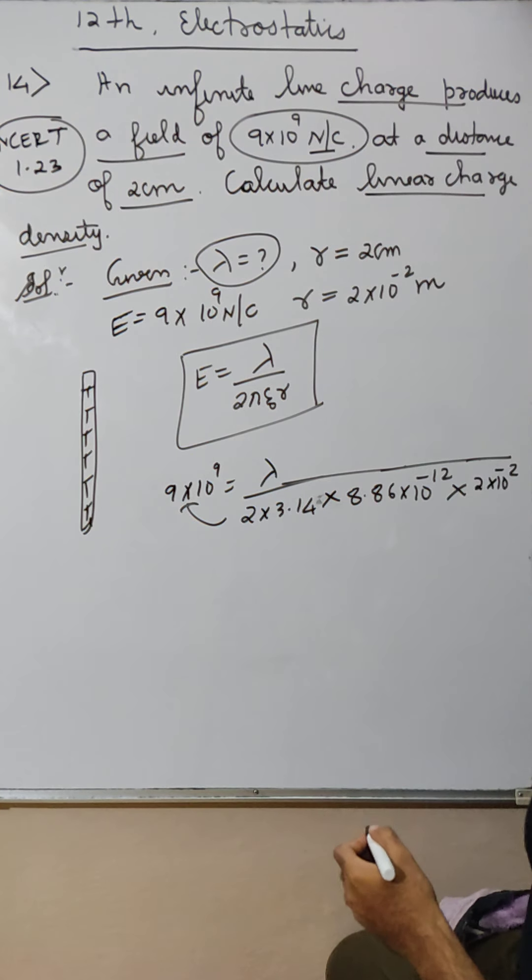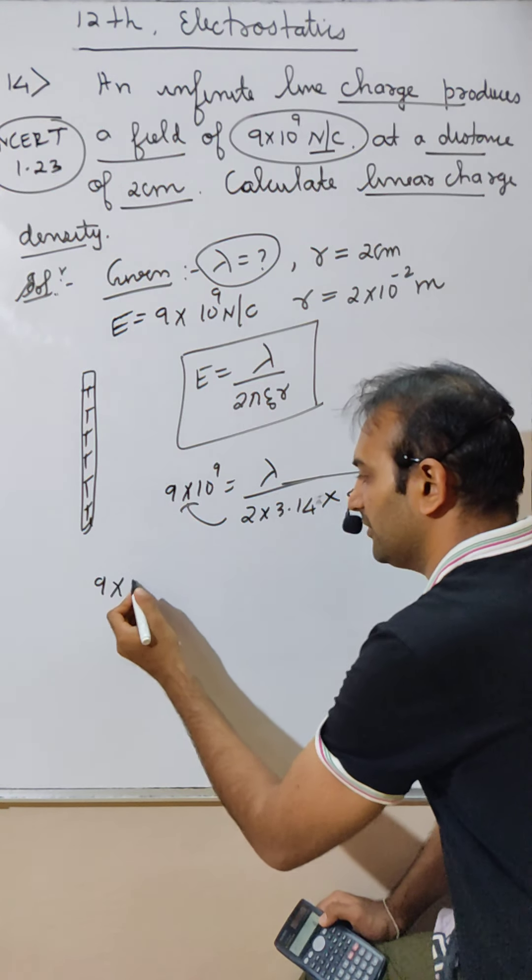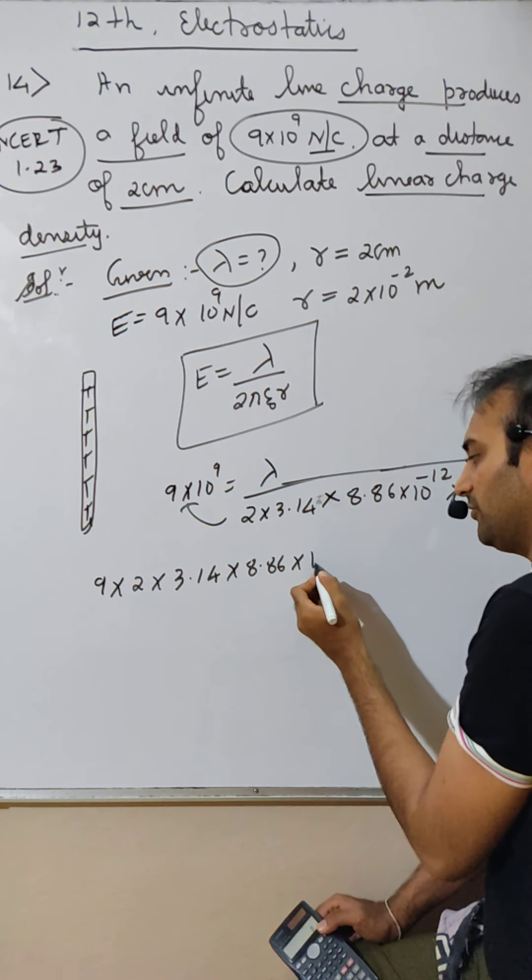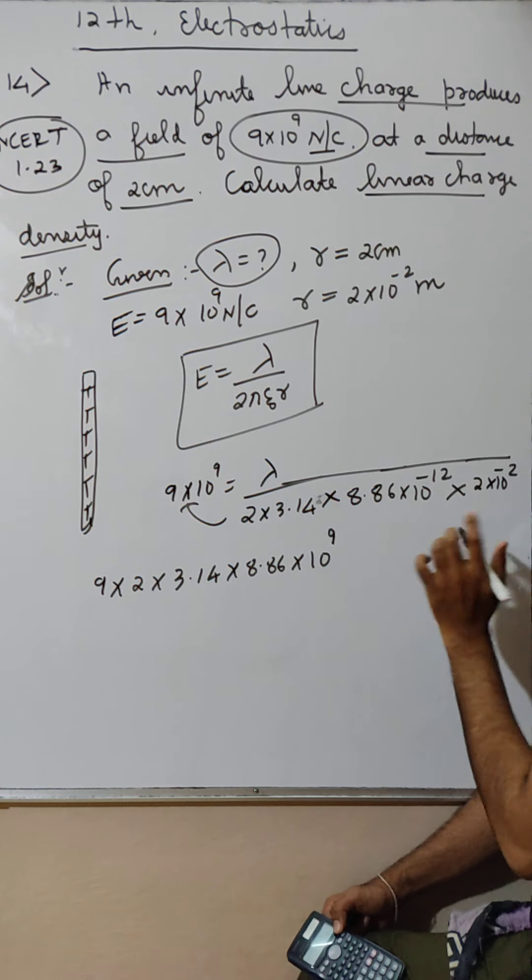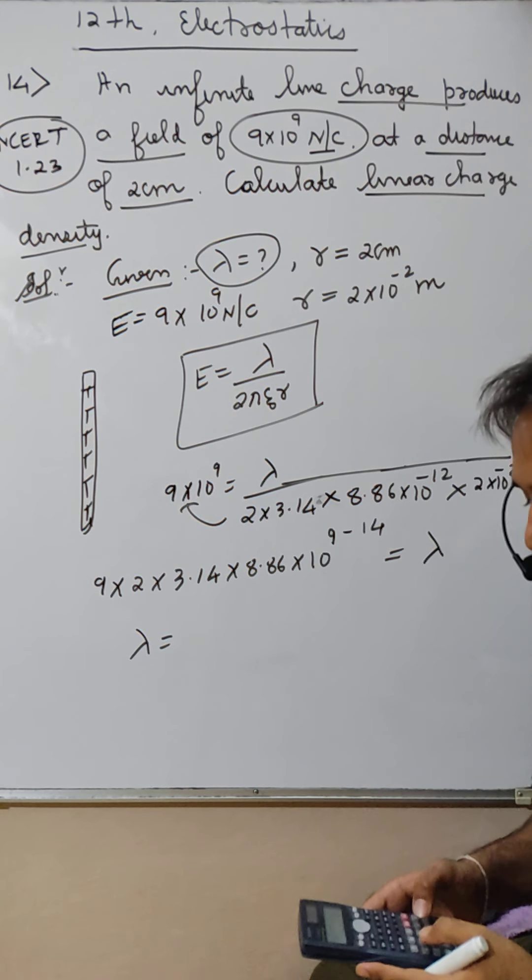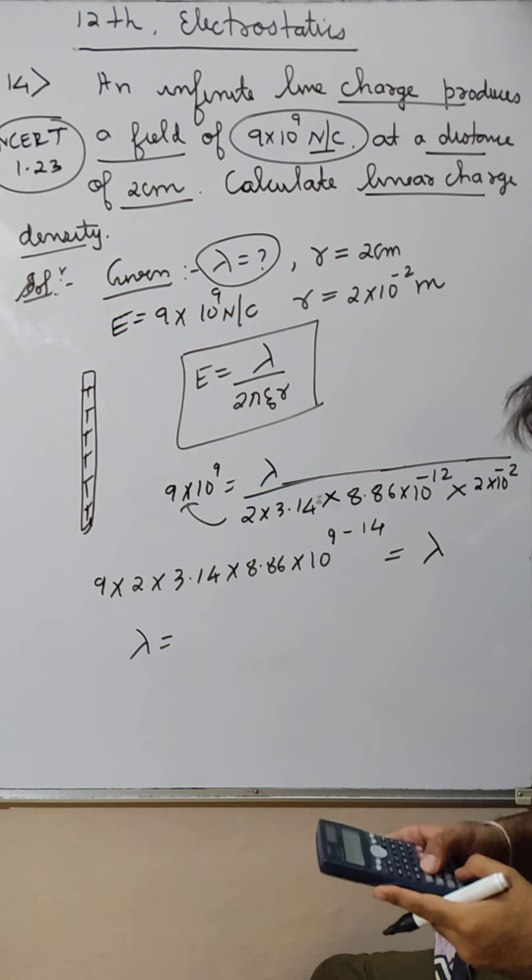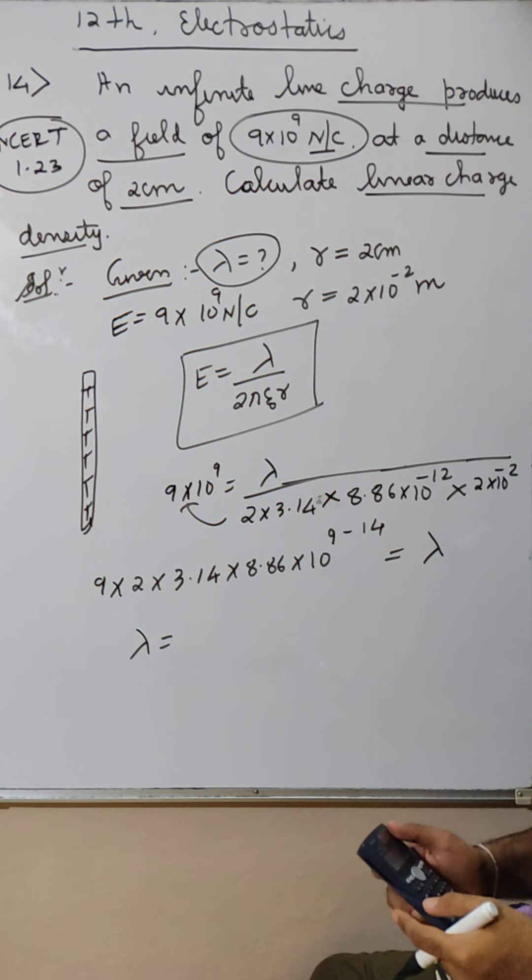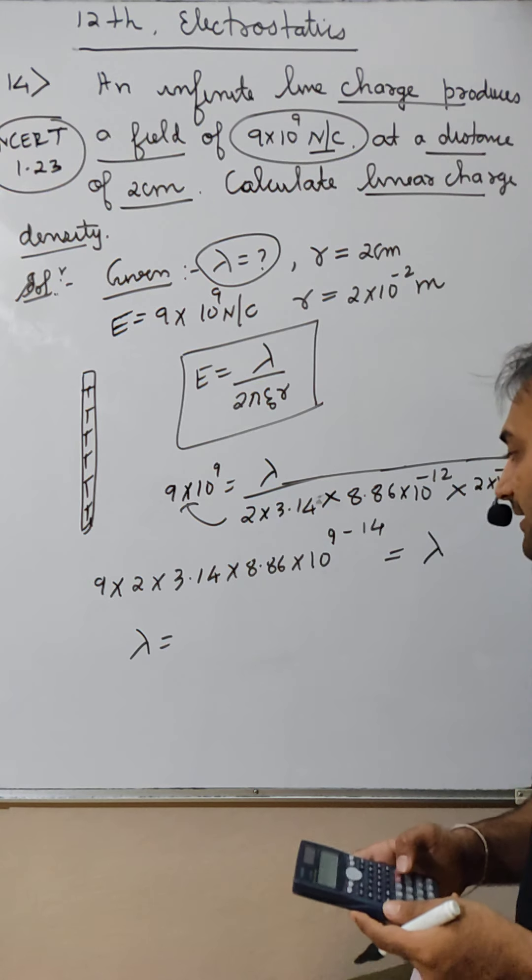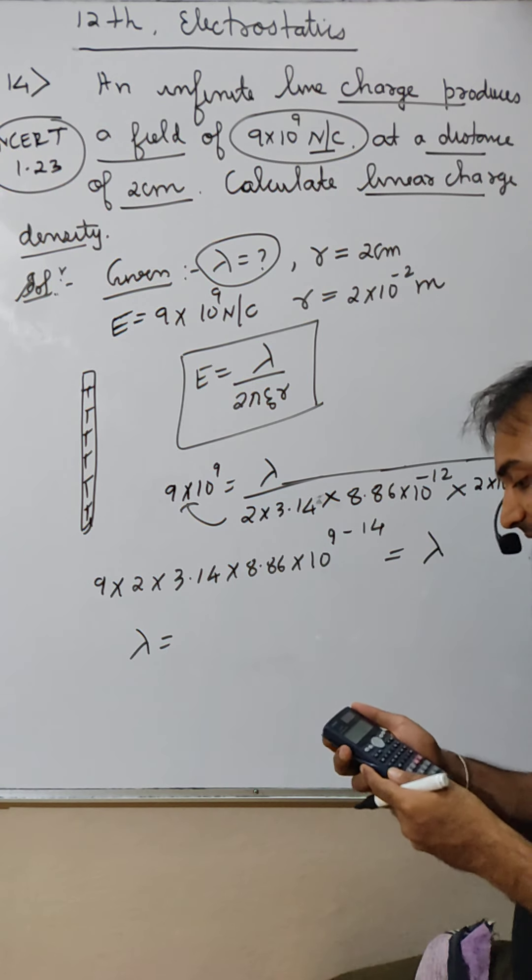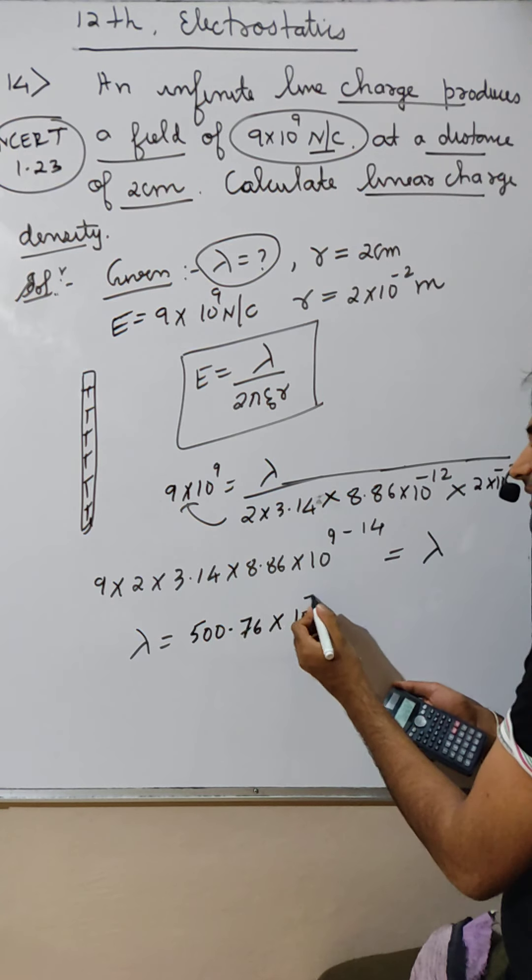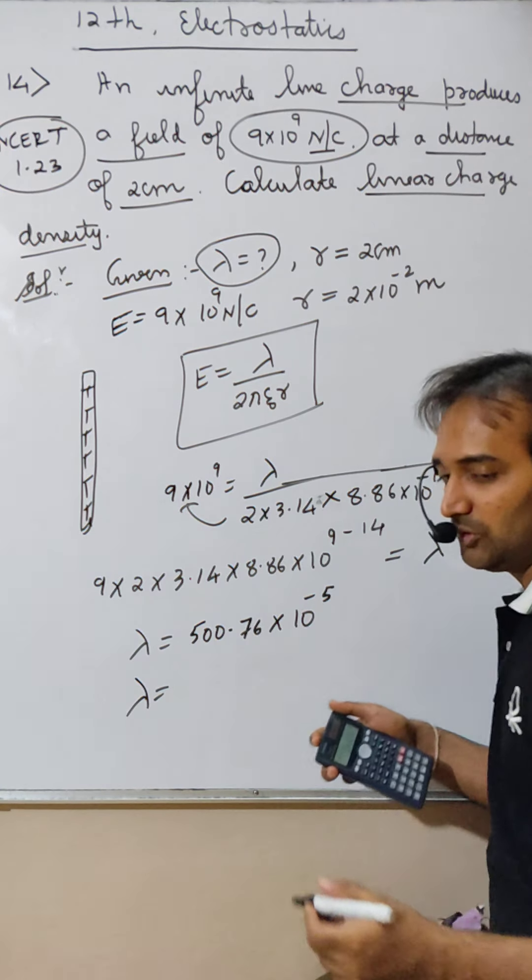I am also taking calculator. 9 into 2 into 3.14 into 8.86 into 10 raise to 9 minus 2, 12 minus 2, minus 14 is lambda.